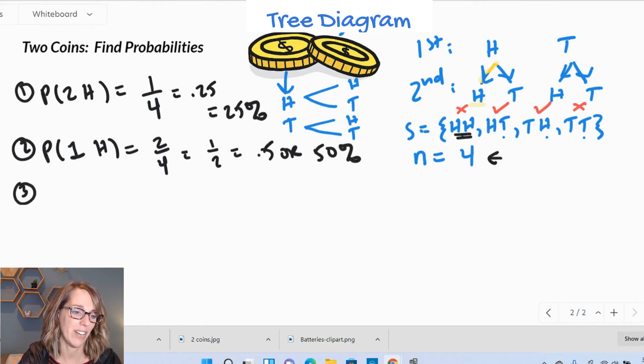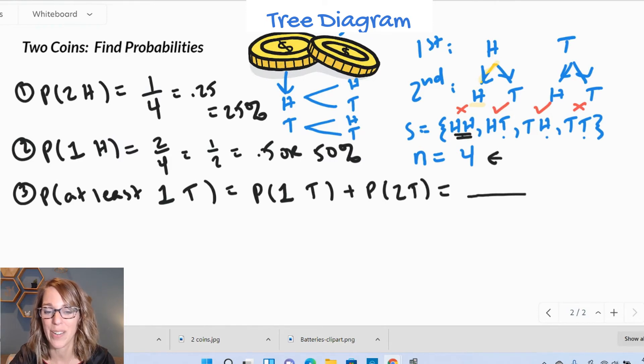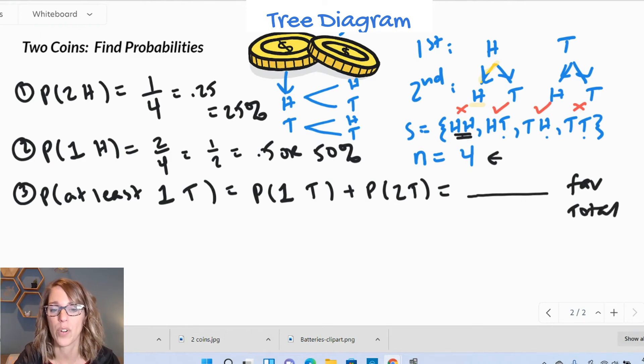Number three, we can do an at least here. Let's do the probability that we get at least one tail. I can break this one down into cases. So this would be the probability of getting exactly one tail, at least one, so two would work too. Or, so I'm going to add those probabilities together, getting two tails. Here's what it looks like when I count favorable over total. My favorable outcomes, I'll take either one or two. So I'm going to take this one, this one, and this one. That gives me three favorable outcomes out of the four. So three fourths would be 0.75 or 75%.